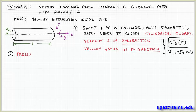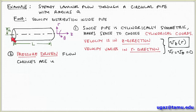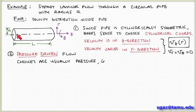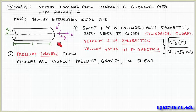The driving force for this pipe flow is pressure. We have a higher pressure on the left-hand side than on the right-hand side, creating a driving force for flow from left to right in the z direction. Pressure, gravity, and shearing are the kinds of driving forces usually of interest for these problems.